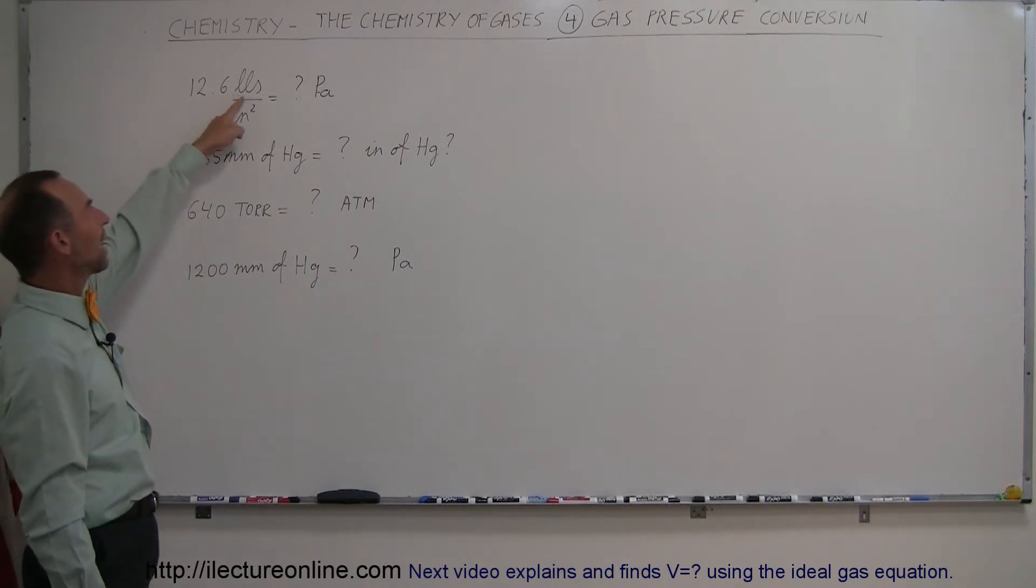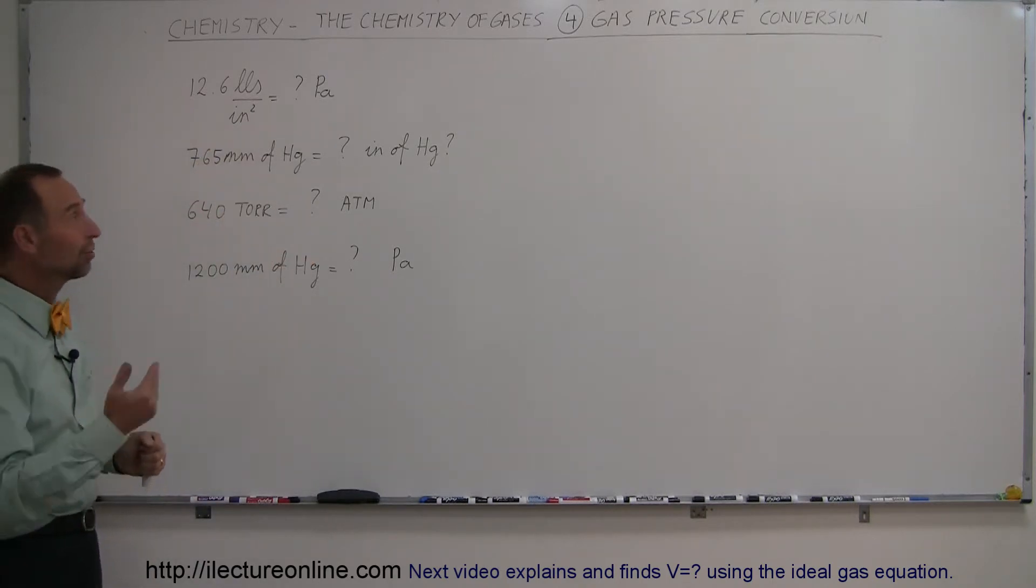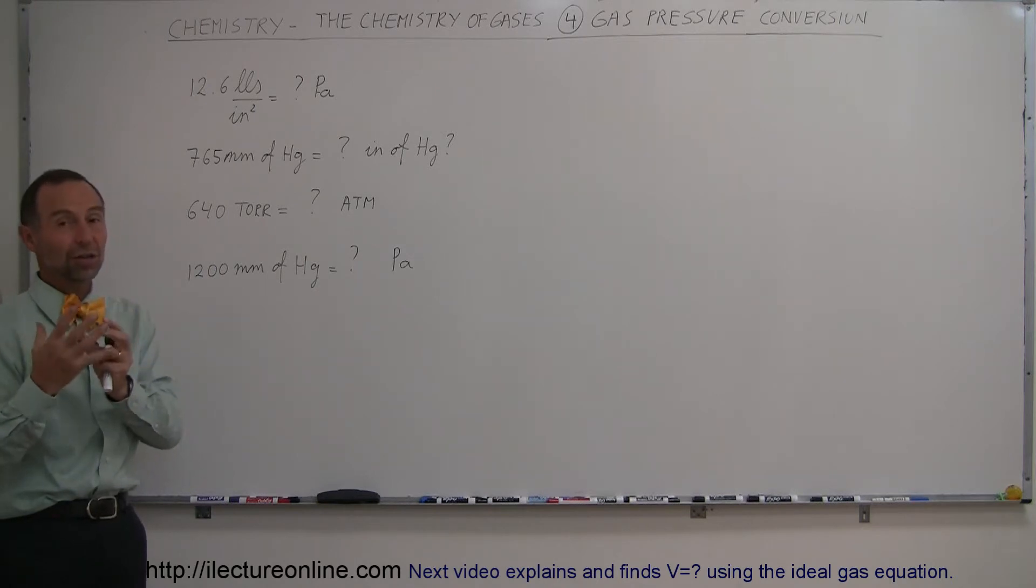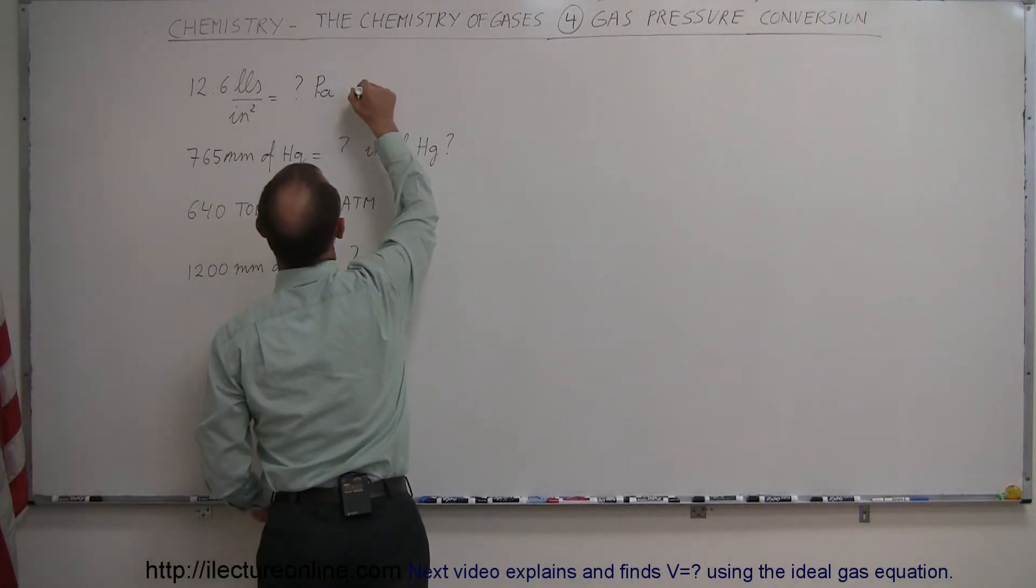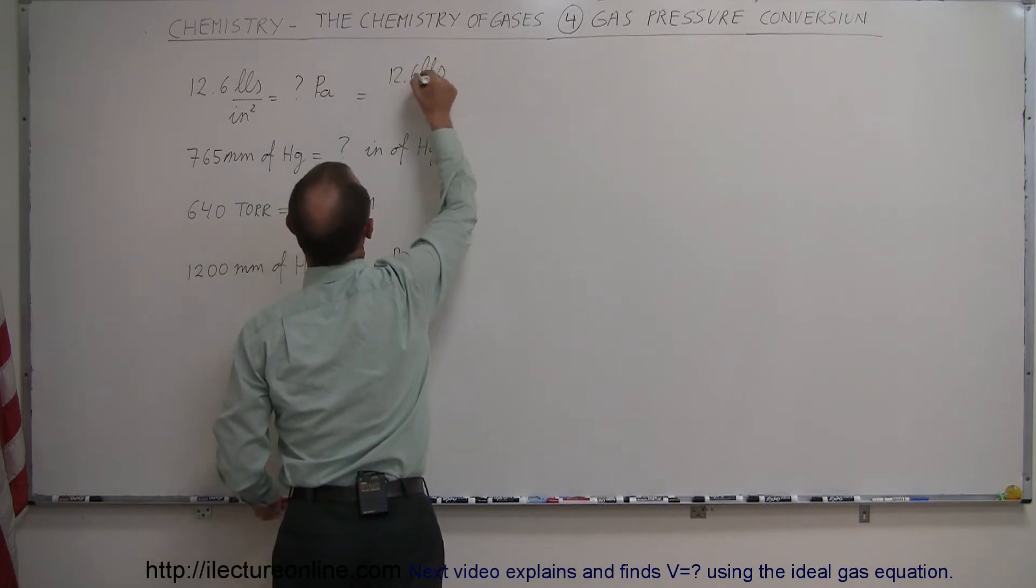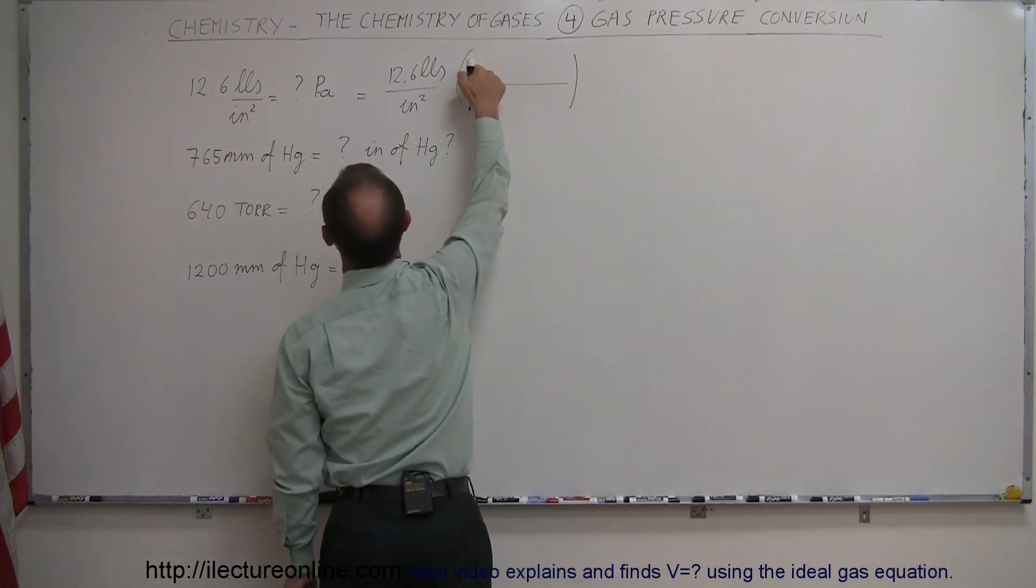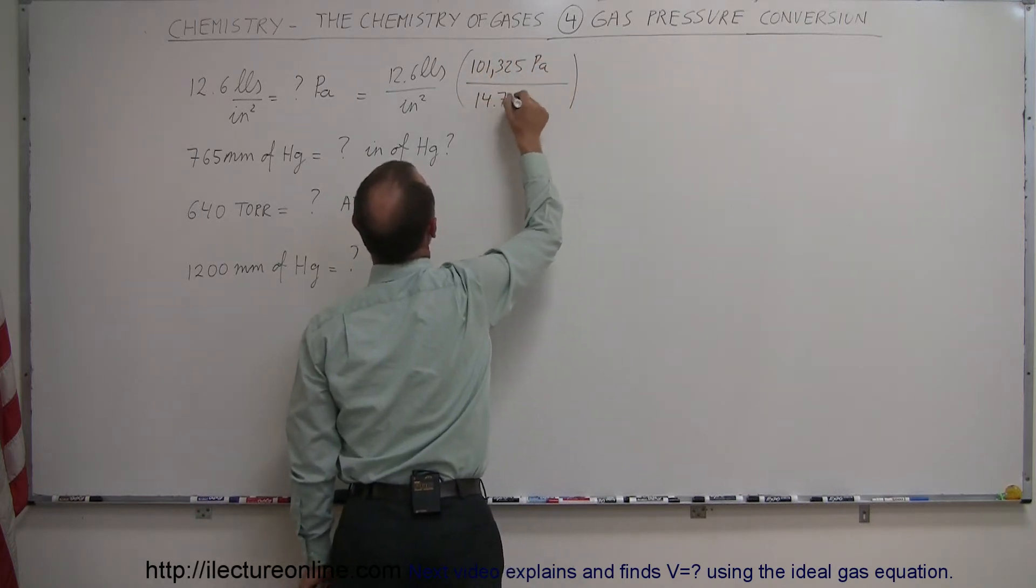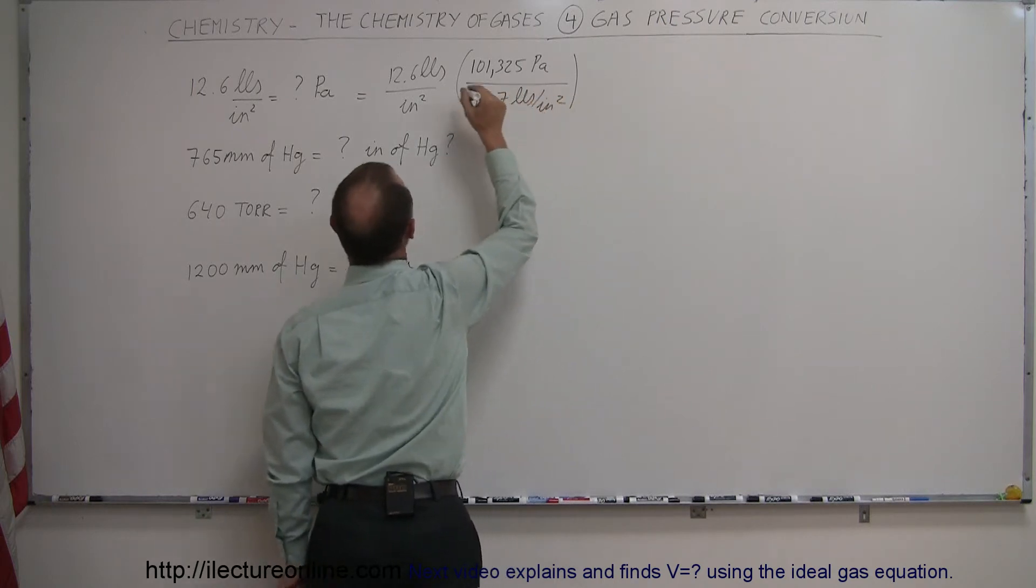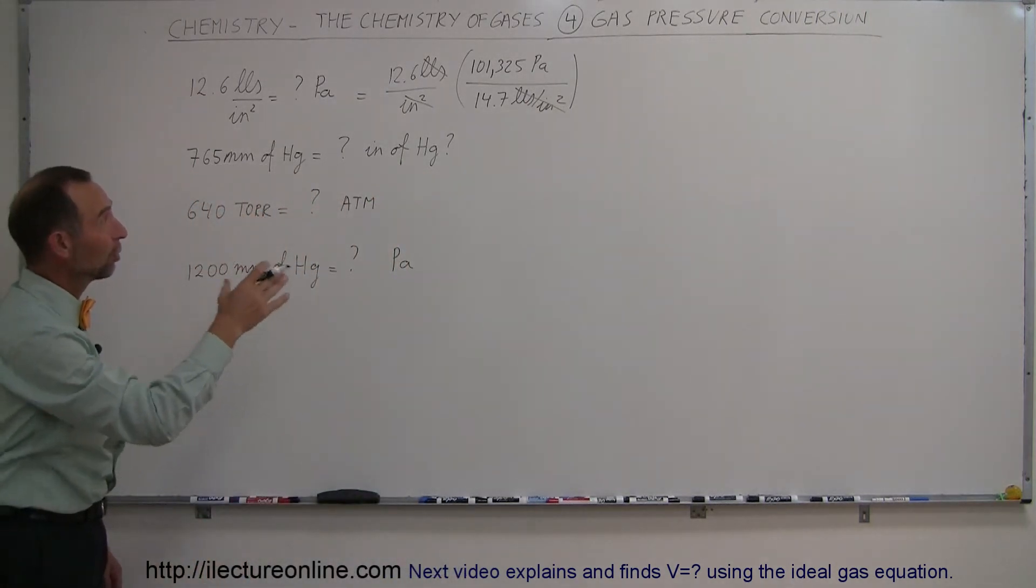We could of course convert from pounds to Newtons and from square inches to square meters, but it's just a lot easier just to realize that atmospheric pressure is 14.7 pounds per square inch, and atmospheric pressure is also 101,325 Pascals, things we can readily get out of the back of each of the textbooks that we have. So we can simply say we're going to multiply this, so this is equal to 12.6 pounds per square inch, and we're going to convert that, so the standard units for pressure is 101,325 Pascals, and that's in 14.7 pounds per square inch. Notice that the pounds per square inch will cancel out with that, and we just use that conversion factor to go from pounds per square inch to Pascals.